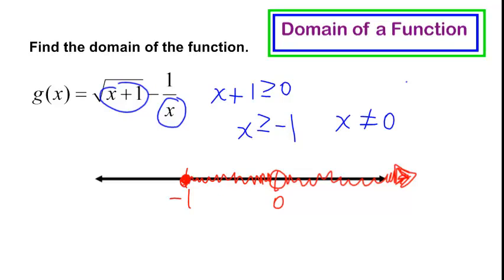How do I write this in interval notation? I will start with negative 1, and I will use a bracket because it can include negative 1. I will go up to 0. I'm going to take a little break there because it cannot equal 0. But right after 0, I'm going to start back up and I will go to infinity. Good luck on finding the domain of functions.